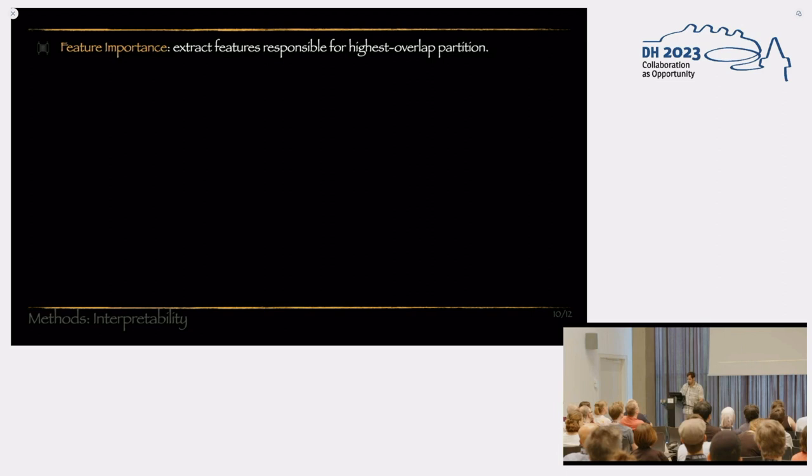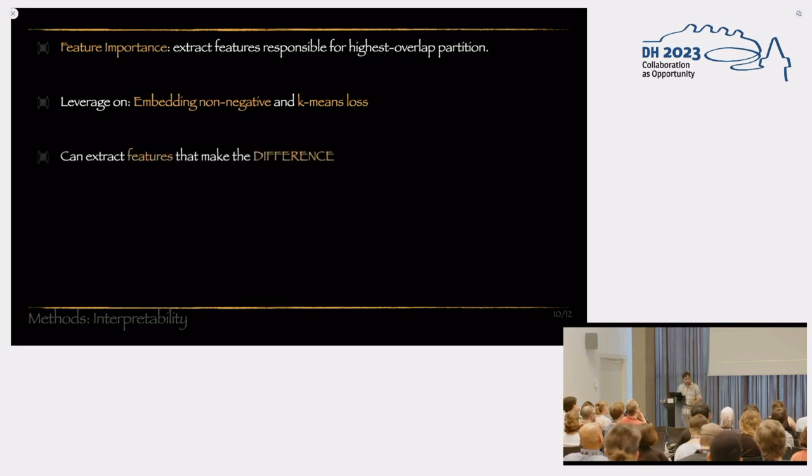The last thing in our pipeline is to extract the features that are responsible for some partition. We want to see which features are responsible for these two groups, say the P and non-P clusters, to be as different as possible. So we leverage on some mathematical properties that are listed in the paper of the embedding and the k-means algorithm, which we use for the unsupervised clustering, which allows us to extract features that make the difference.